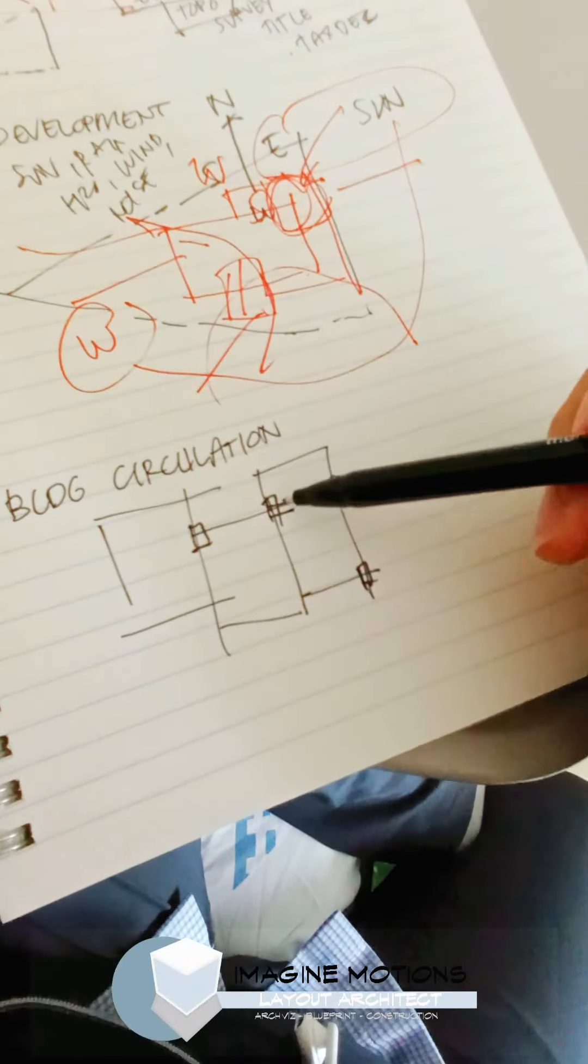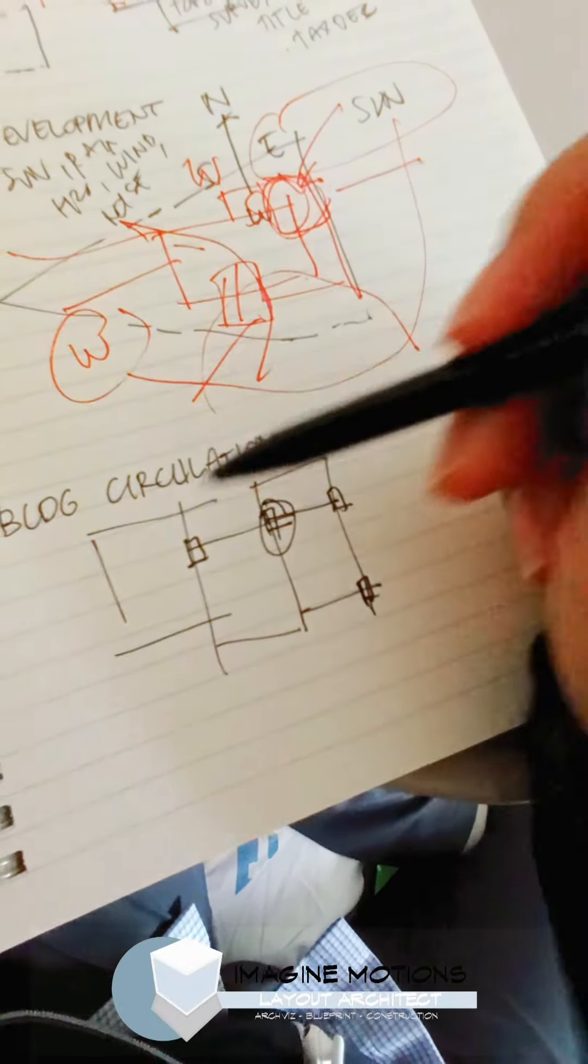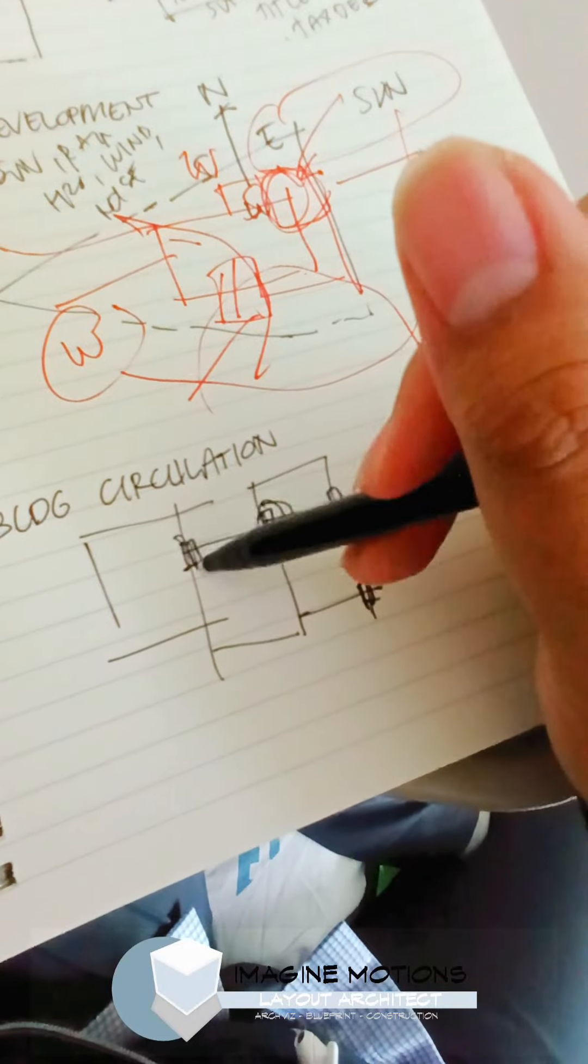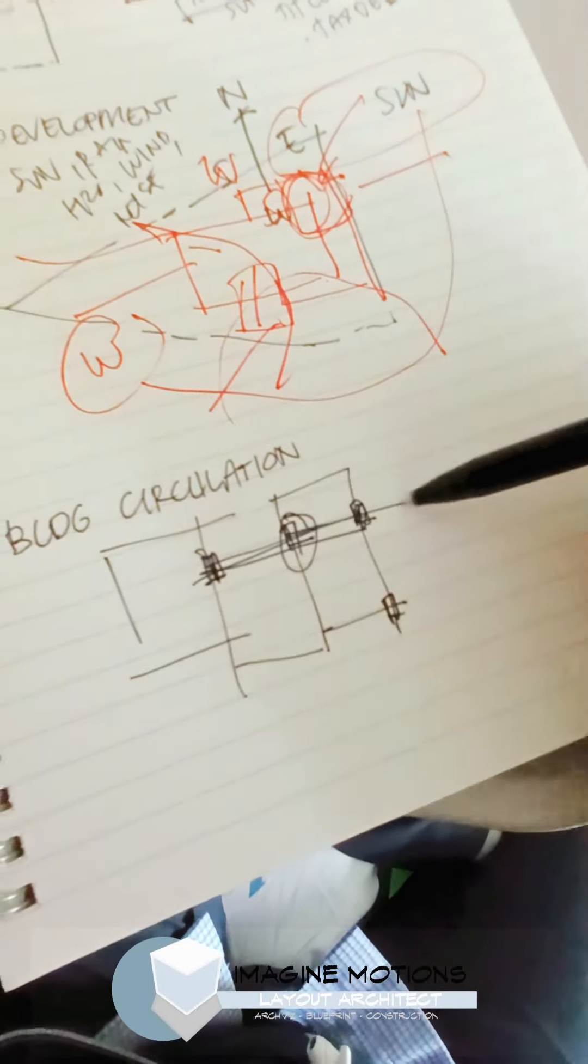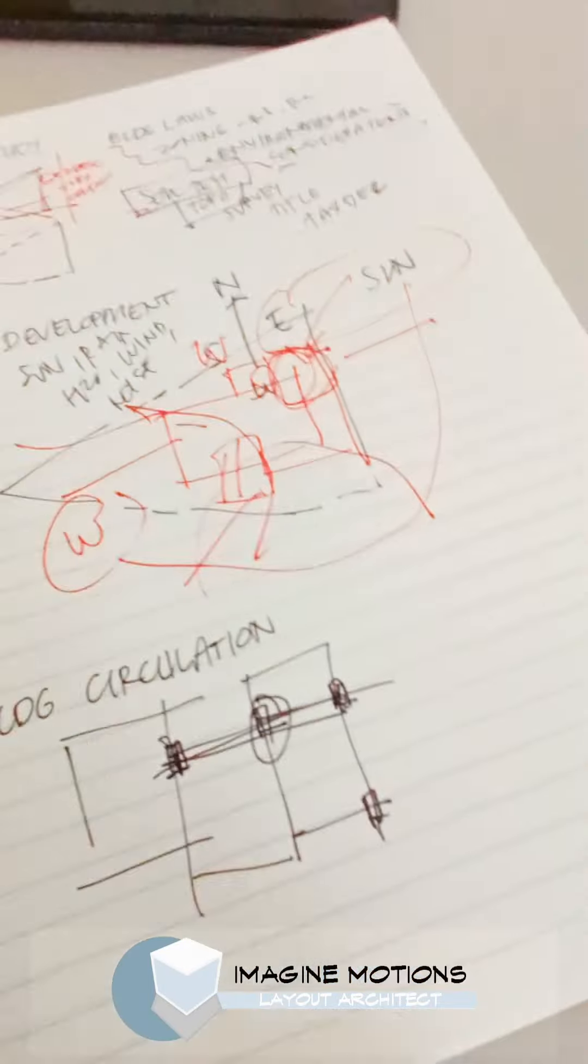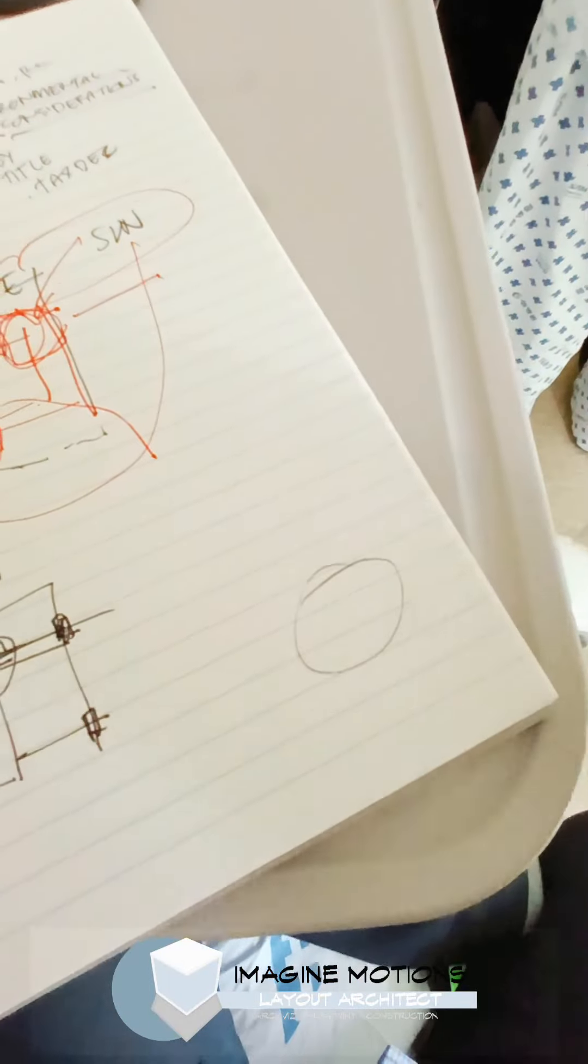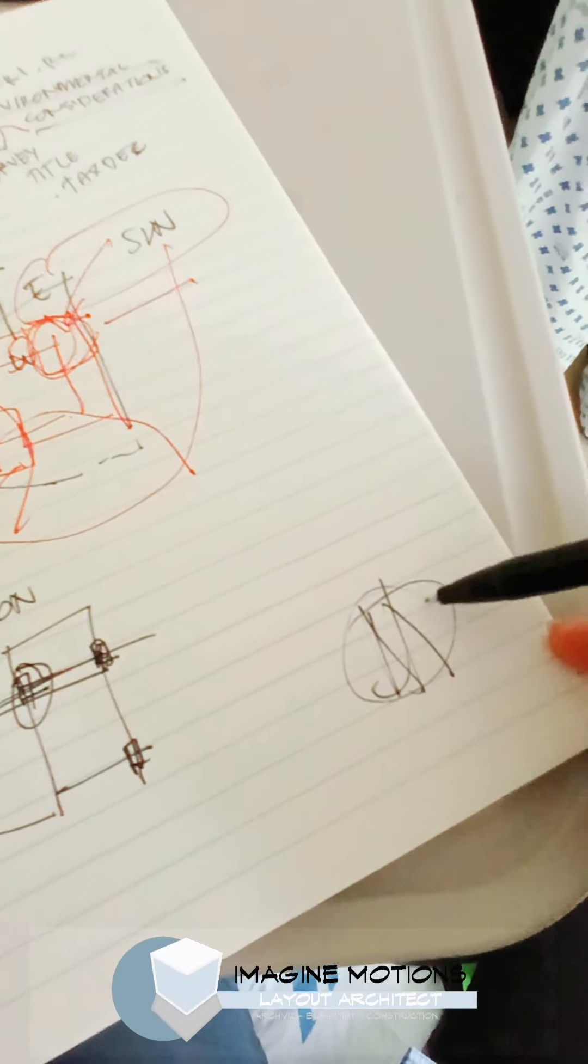Say for example, engineer said, this can be eliminated because this one and this one could actually carry the load. What an architect would do is to start with bubble diagrams upon entry.